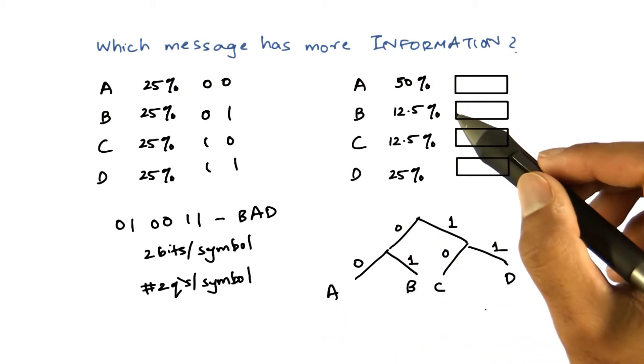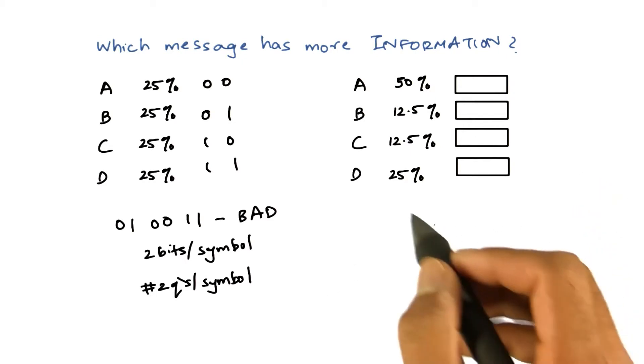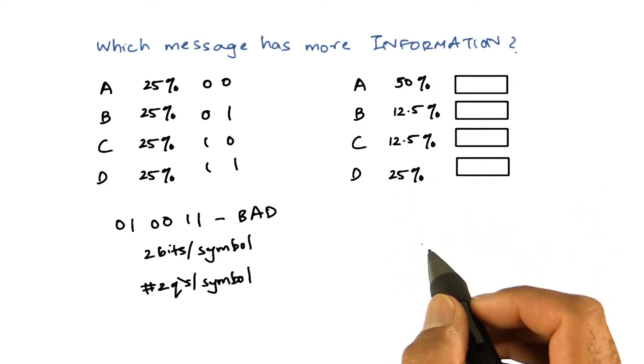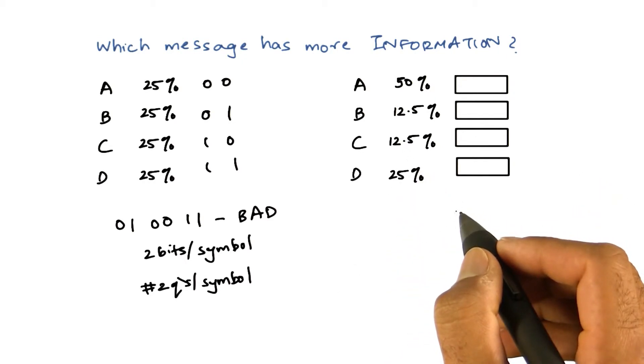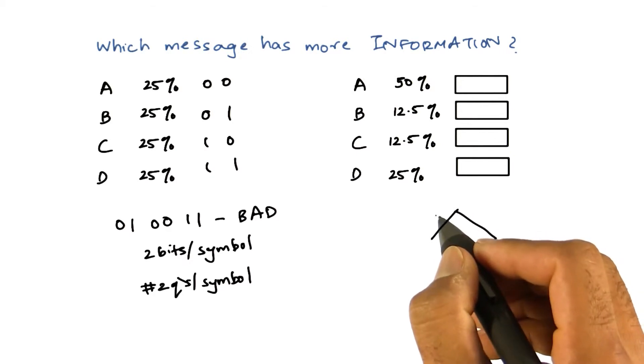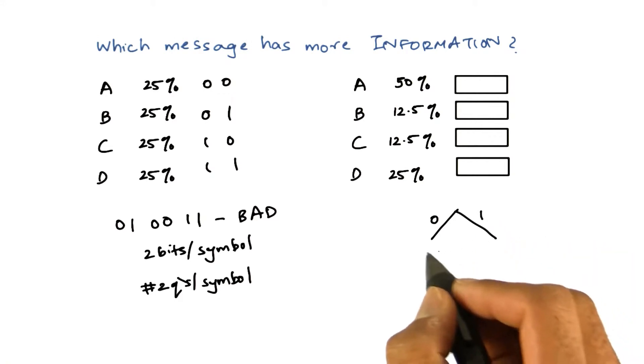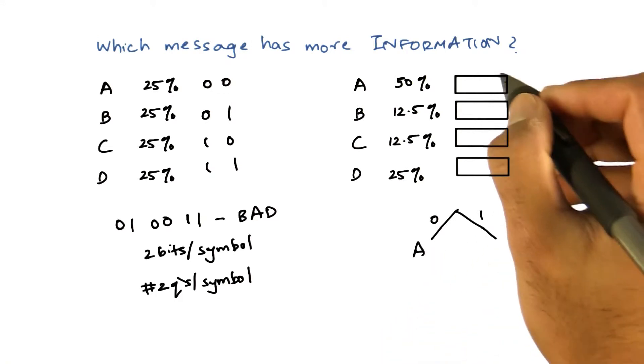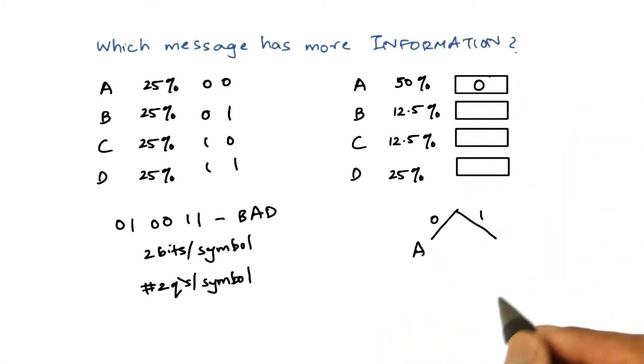But what happens in this new language? In this new language, A occurs 50% of the time. So we can directly ask if it is A or not A. So let's represent that as 0 or 1 and let A be 0. So now we got our A as just a 0.